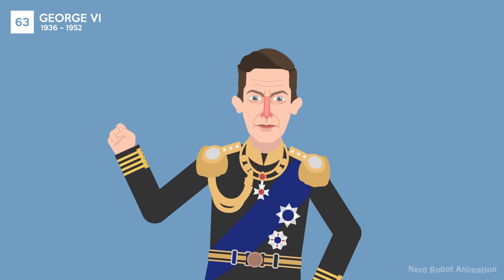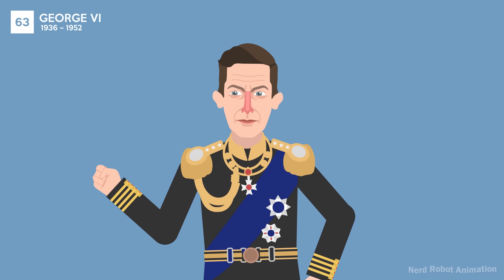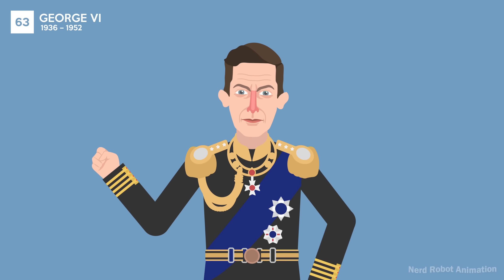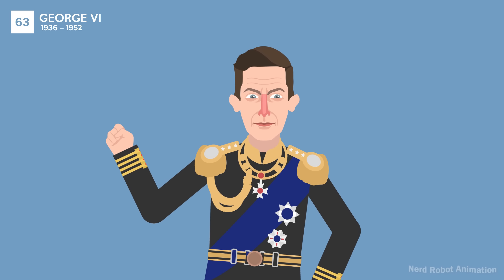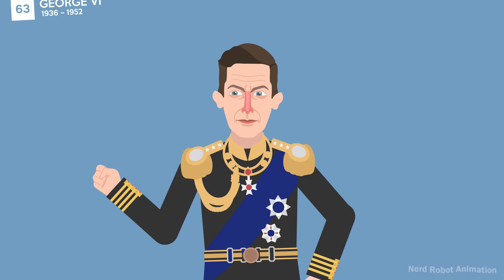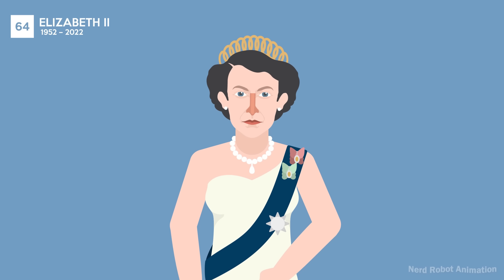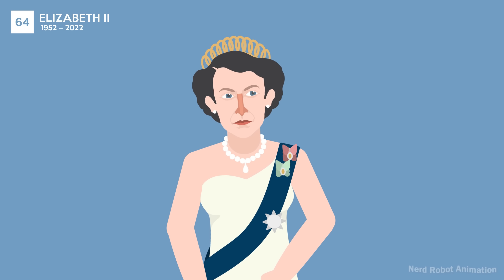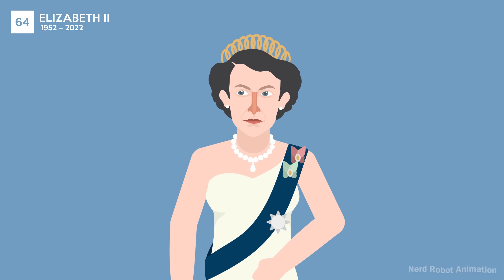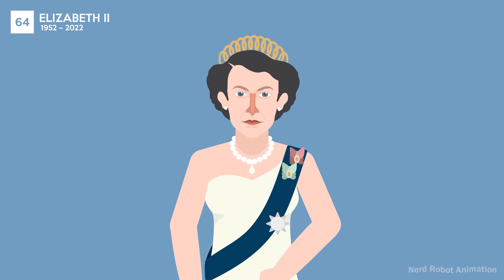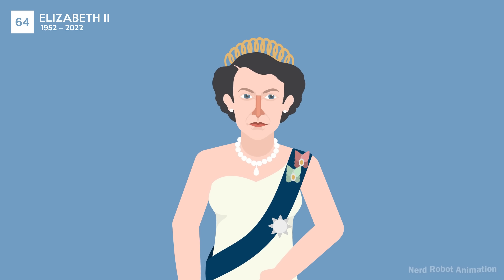George VI led Britain through World War II, becoming a symbol of national resistance. His struggle with a speech impediment was portrayed in the film The King's Speech. Elizabeth II's reign was the longest in British history, overseeing significant changes in society and the monarchy. Her period saw decolonization and modernization of the royal institution.